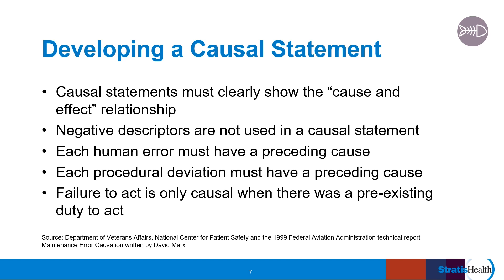An RCA should result in a causal statement that clearly and succinctly states what happened and, based on the RCA findings, what the identified root cause or causes are. David Marks identified five rules of causation that should be considered when developing a causal statement. A good causal statement shows the cause and effect relationship and can make the corrective action plan much easier to develop, and helps clearly align the problem, the root cause, and the proposed actions to prevent recurrence.